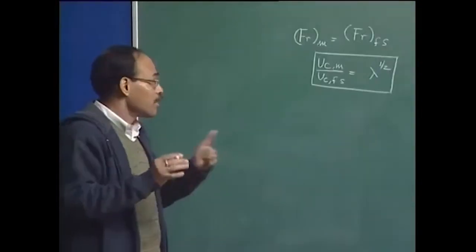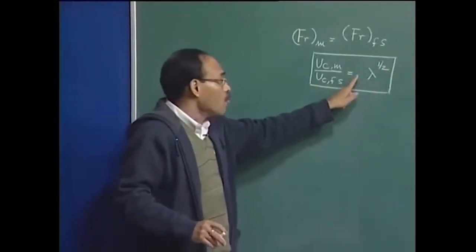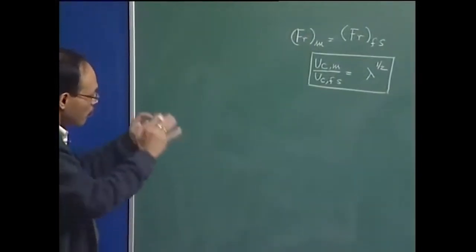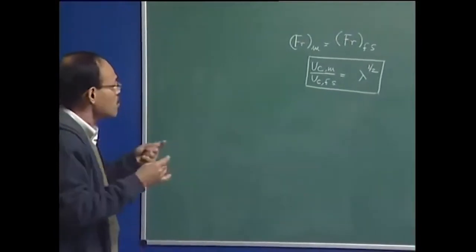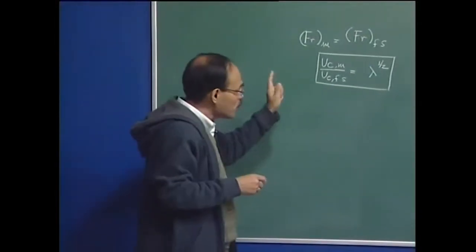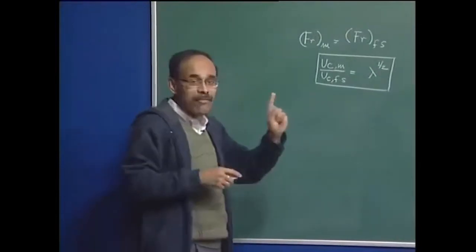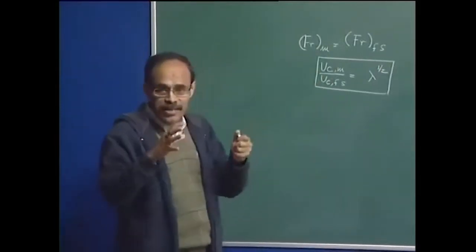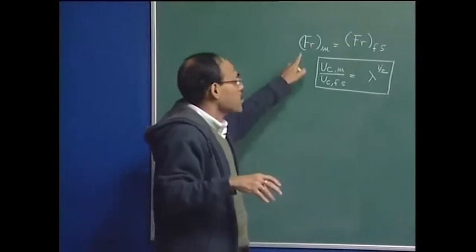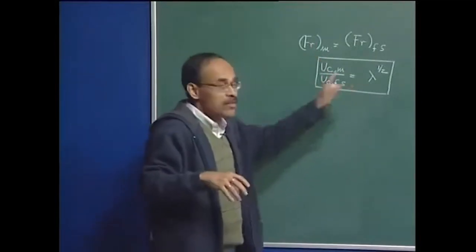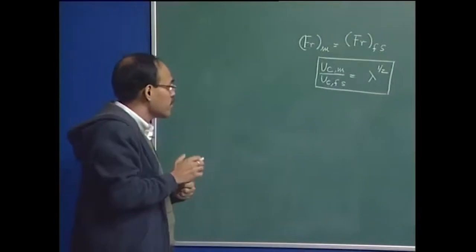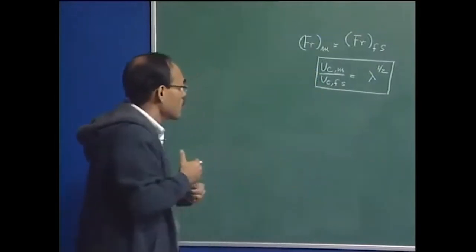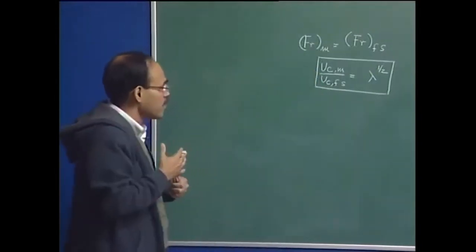So we will have geometrical similarity. On the basis of this analysis, how the argon flow rate can be calculated from the full-scale flow rate will be shown. But before that, I will say a few words about kinematic similarity. Dynamic similarity between model and full scale is going to be maintained based on the Froude criterion. Geometrical and dynamic similarity criteria can thus be derived from the analysis just presented.